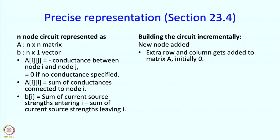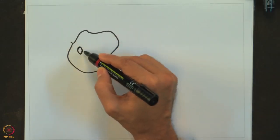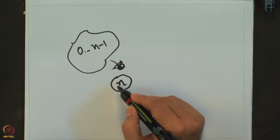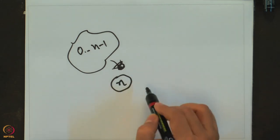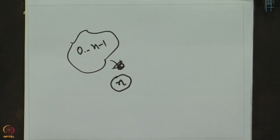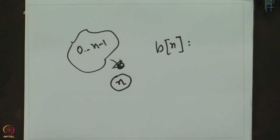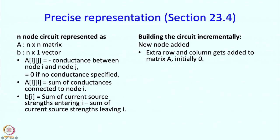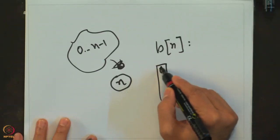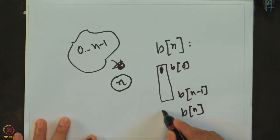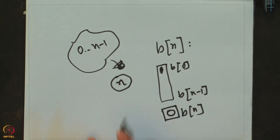Suppose the circuit already had nodes 0 through n-1. When we create new node n, this corresponds to increasing the number of rows and columns. The nth row corresponds to the new node and must be made 0. B[n] should contain the sum of currents from sources, but right now there are no sources connected, so 0 is added to column vector B.